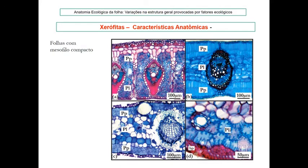O mesofilo compacto é observado em todos esses exemplos: folha de velozia (canela-de-ema), folha de Melaleuca (Myrtaceae) com características xeromórficas, mesofilo isobilateral paliçádico-lacunoso-paliçádico, sempre muito compacto. No corte transversal, também observamos mesofilo plicado — as células têm várias reentrâncias para aumentar a superfície de contato entre elas, mas sem espaços intercelulares.